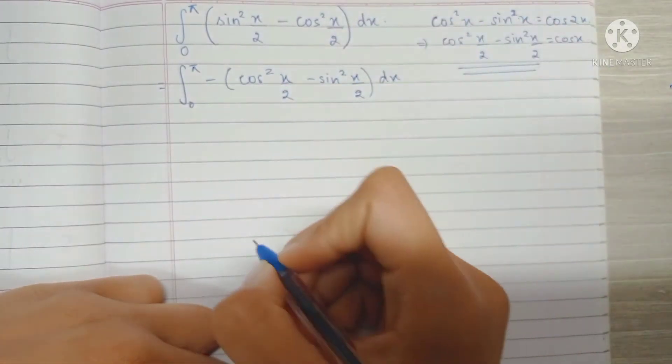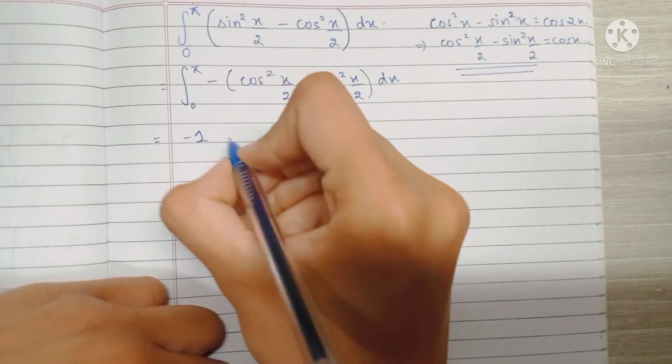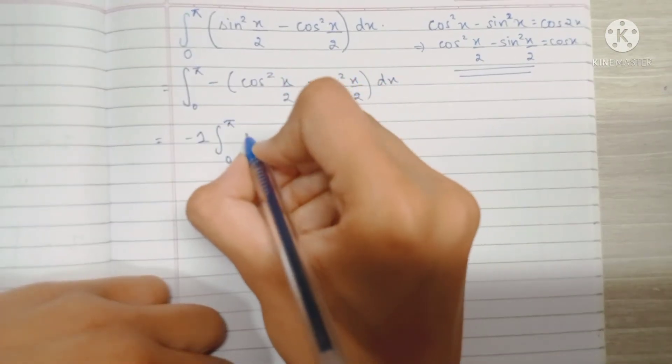And I can write this as cos x. So taking minus 1 outside the integral, inside the integral I have cos x from 0 to pi.